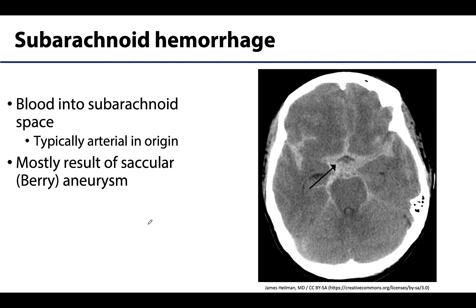Hemorrhage may also occur in the subarachnoid space. Recall that the subarachnoid space is located between the arachnoid and the pia mater, and that this is a naturally occurring space. The vasculature traverses this region, and occasionally one of those arteries can have an aneurysm that ruptures, which is the cause of most subarachnoid hemorrhages.